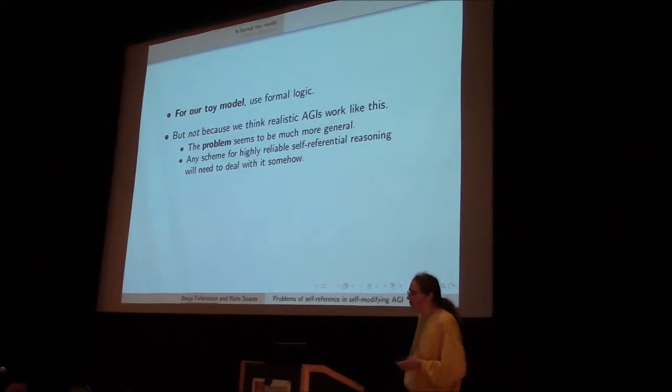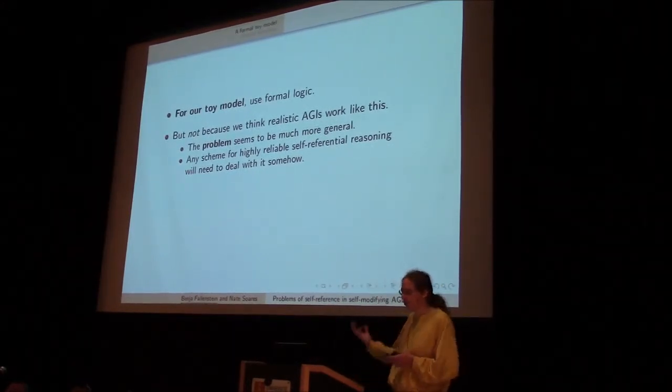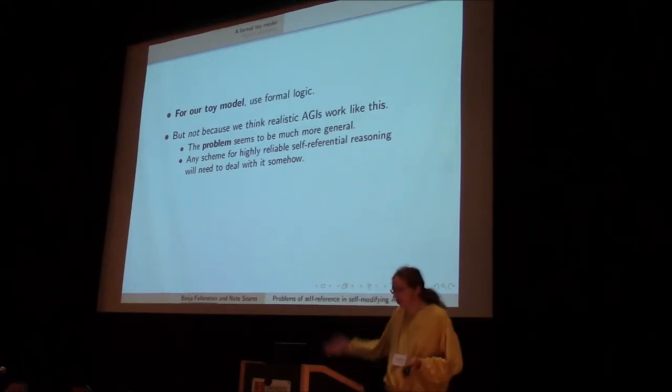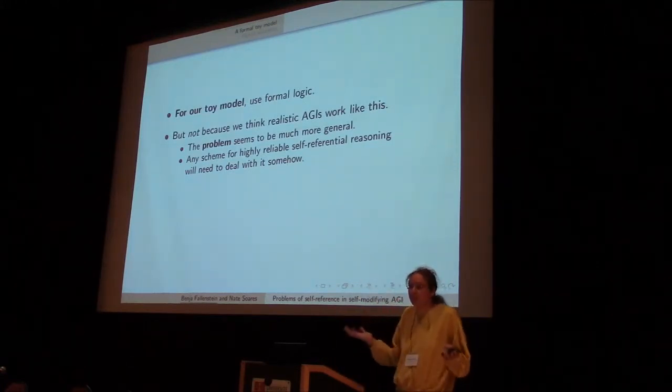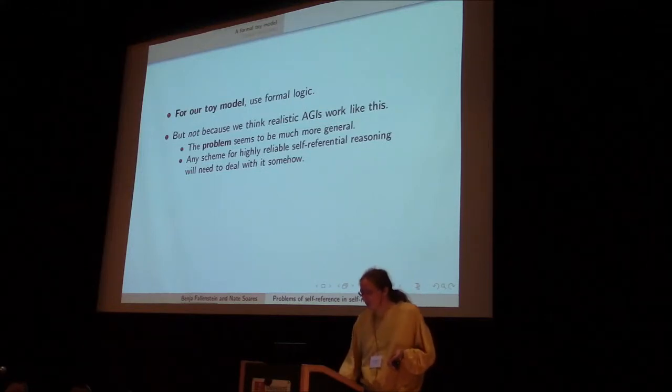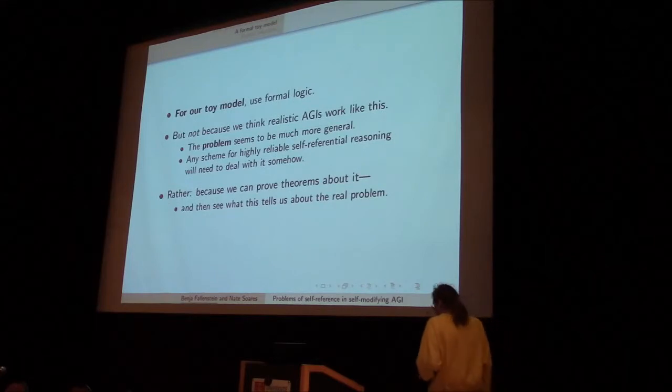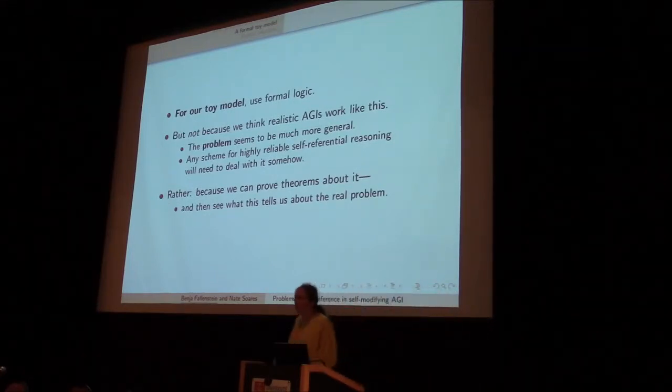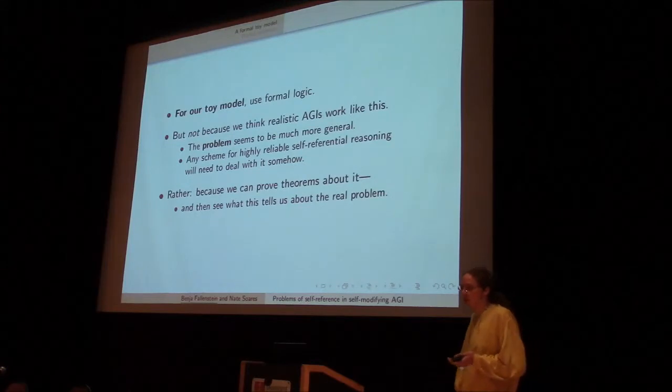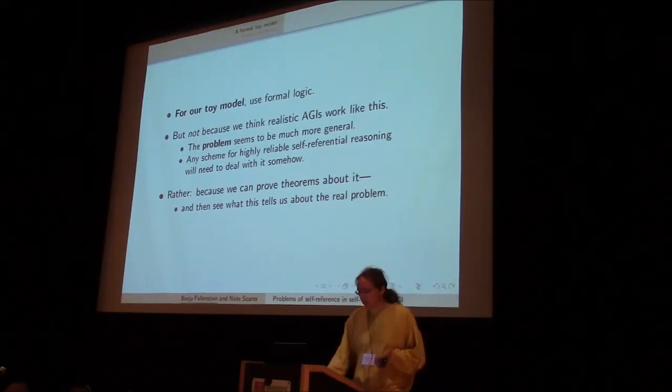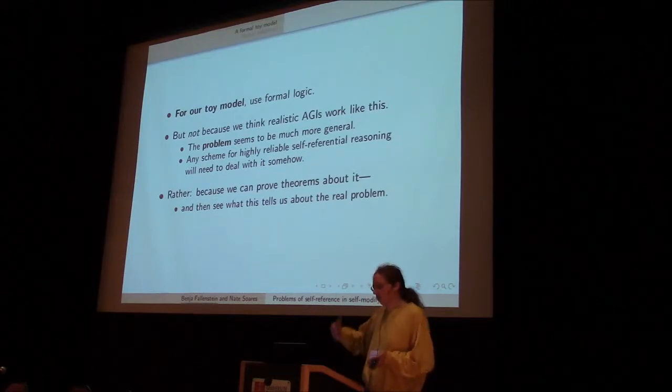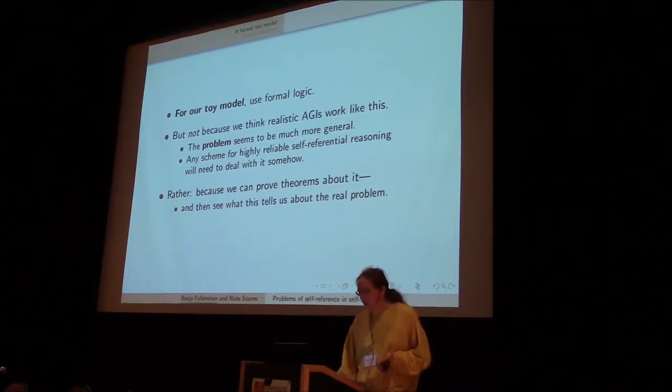So for this formal toy model, I'll think about an AGI that uses formal logic, a proof search. And we don't actually think that this is how AGI is actually going to work. That's not the point. In fact, we think that this problem is much more general and doesn't just apply to logic, because what I've assumed is just pretty intuitive reasoning. And the reason that we use formal logic is just so that we can analyze what's going on here, that we can prove theorems about it.